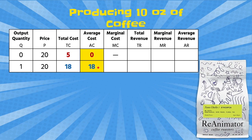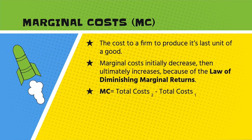Whenever you hear the word marginal, we're talking about the additional — the additional cost of producing one more unit. Marginal cost is the cost for a firm to produce one extra unit of a good. Initially the marginal cost will decrease, and if you remember the law of diminishing marginal returns from microeconomics, that explains why. After a couple units of output, the marginal cost curve will start to increase and go back up.